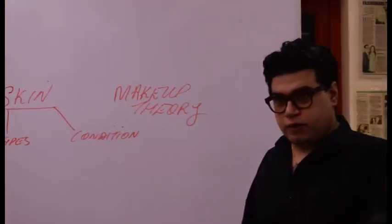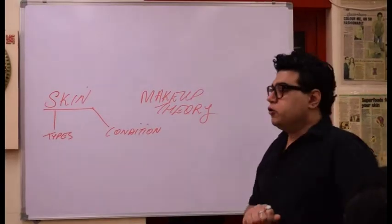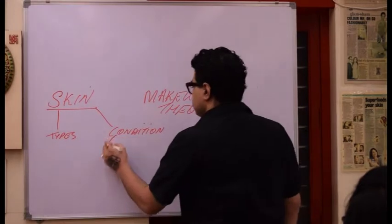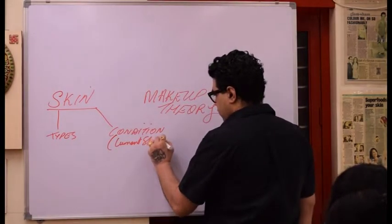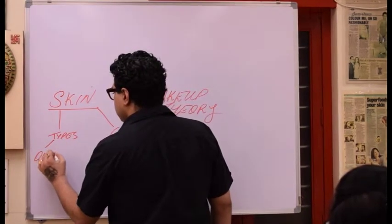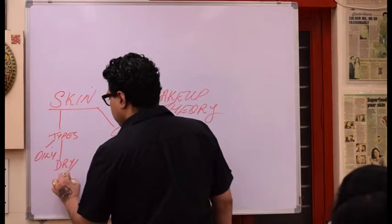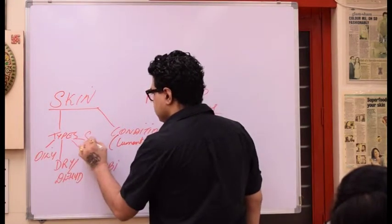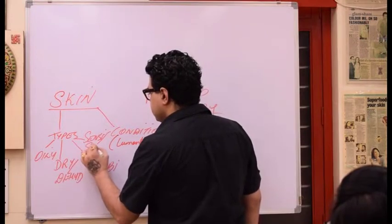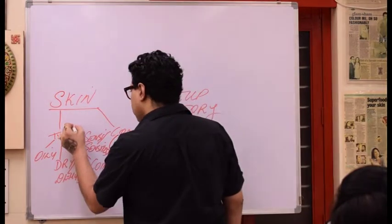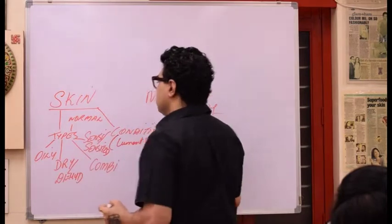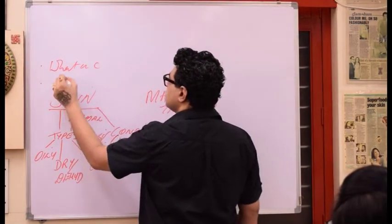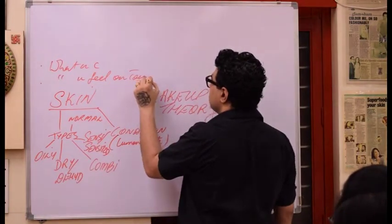Whenever you are about to do makeup, you don't want to make mistakes because you don't understand the skin type and you don't understand the skin condition. Skin condition means the current state. You are oily, dry or dehydrated, combination, sensitive or sensitized. So when you try to understand these types, you have to understand what you see and what you feel.